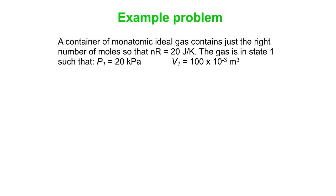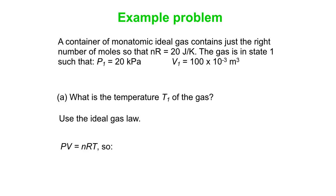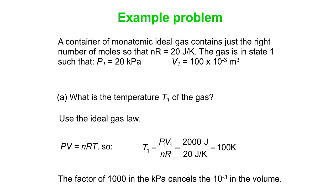Let's consider this example problem. We've got a container of monatomic ideal gas. We happen to choose nR, so nR is 20 joules per Kelvin. The gas in state 1 has a pressure of 20 kilopascals and a volume of 100 times 10 to the minus 3 cubic meters. What's the temperature? We can just use the ideal gas law. We have all the pieces. So we say PV equals nRT, so T is simply PV over nR. Numbers work out nicely. The 20 kilopascals times 100 times 10 to the minus 3, the factor of 1000 in the kilopascals cancels the 10 to the minus 3 in the volume, so we just have 20 times 100, 2000 over 20 joules per Kelvin. We're at 100 Kelvin.